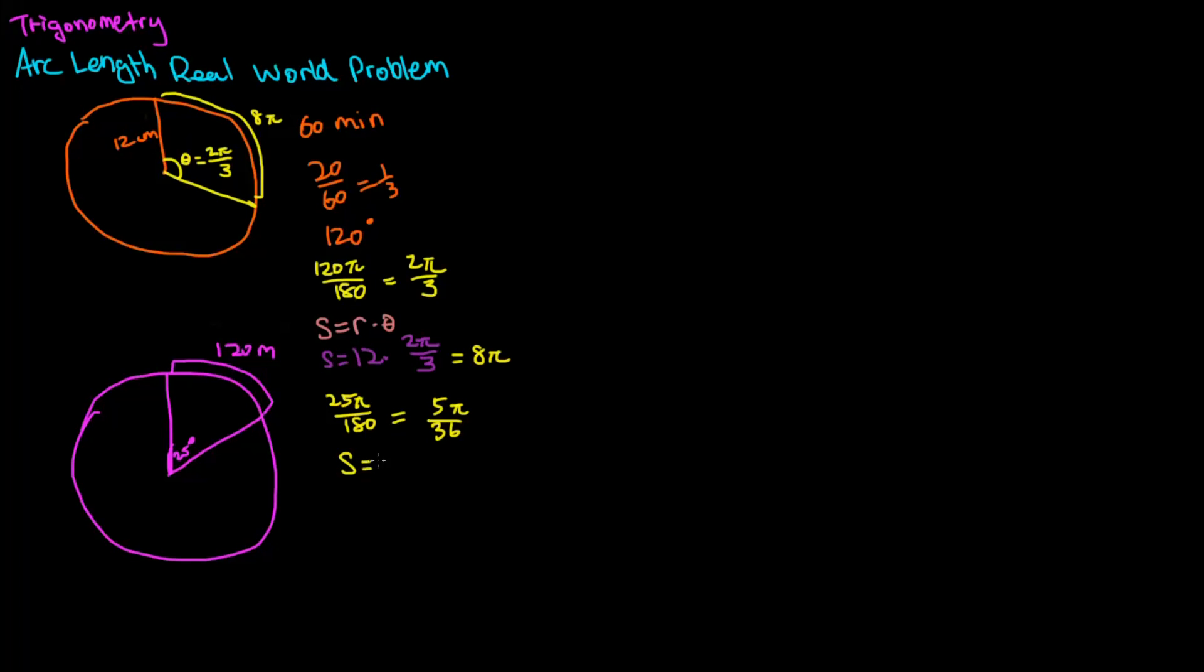So s is equal to radius times theta. In this case, we don't actually want to find s. We know what the curve is, so we want to find radius. To get radius by itself, we're going to divide both sides by theta, and we'll get radius is equal to the arc divided by theta. So we can go ahead and plug in the variables that we know to solve this equation.